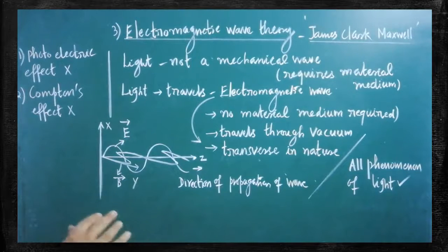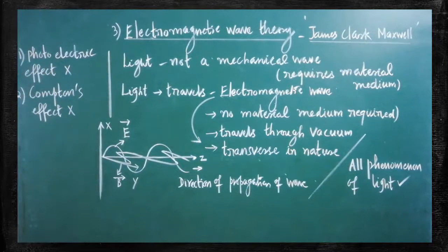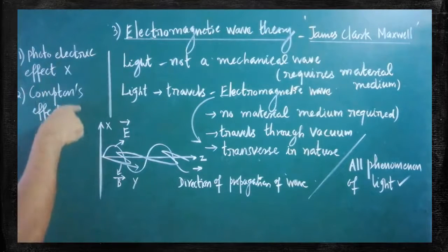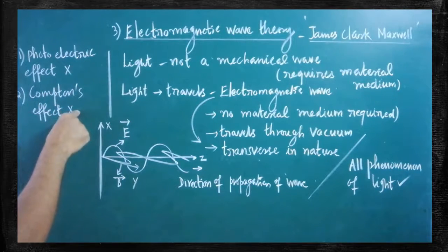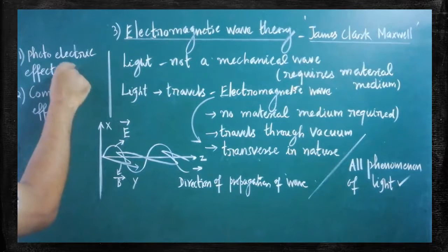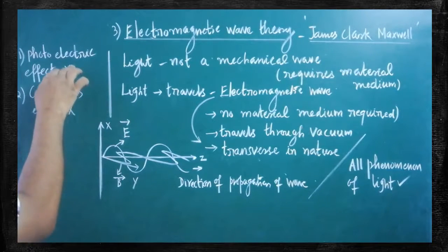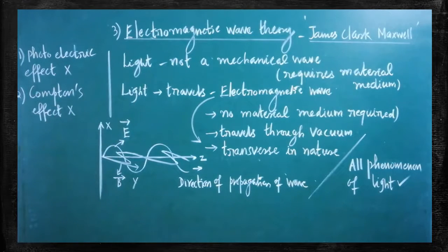No material medium is required for the propagation of light. By using this theory, all phenomena of light were able to be explained — reflection, refraction, interference, and diffraction. These four properties were successfully explained by electromagnetic wave theory. However, two effects were not able to be explained: the photoelectric effect and the Compton effect. The photoelectric effect will be covered in detail in atomic physics and the dual nature chapter, and will be explained using the next theory.